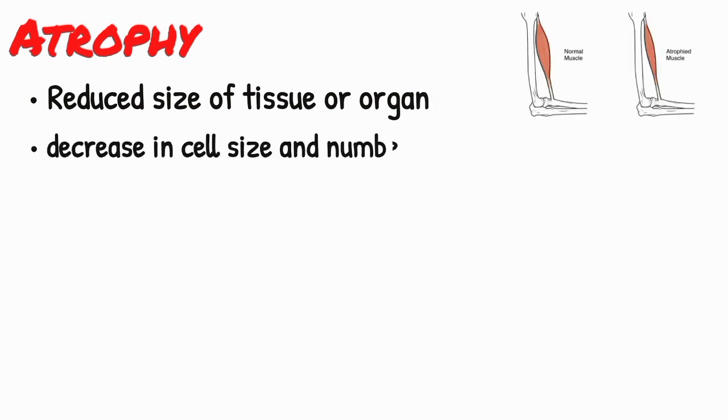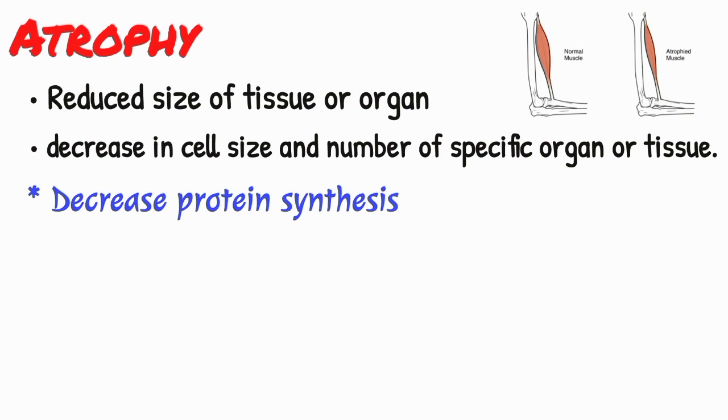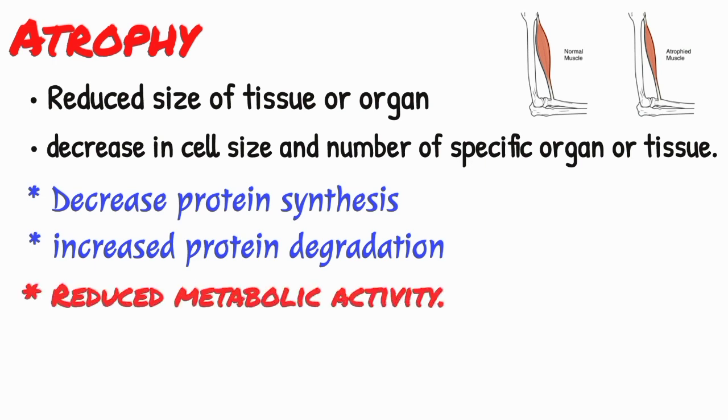Atrophy is a reduced size of tissue or organ resulting from decrease in cell size and number of a specific organ or tissue which was once normal. Atrophy results from decreased protein synthesis and increased protein degradation in cells. Protein synthesis decreases because of reduced metabolic activity.